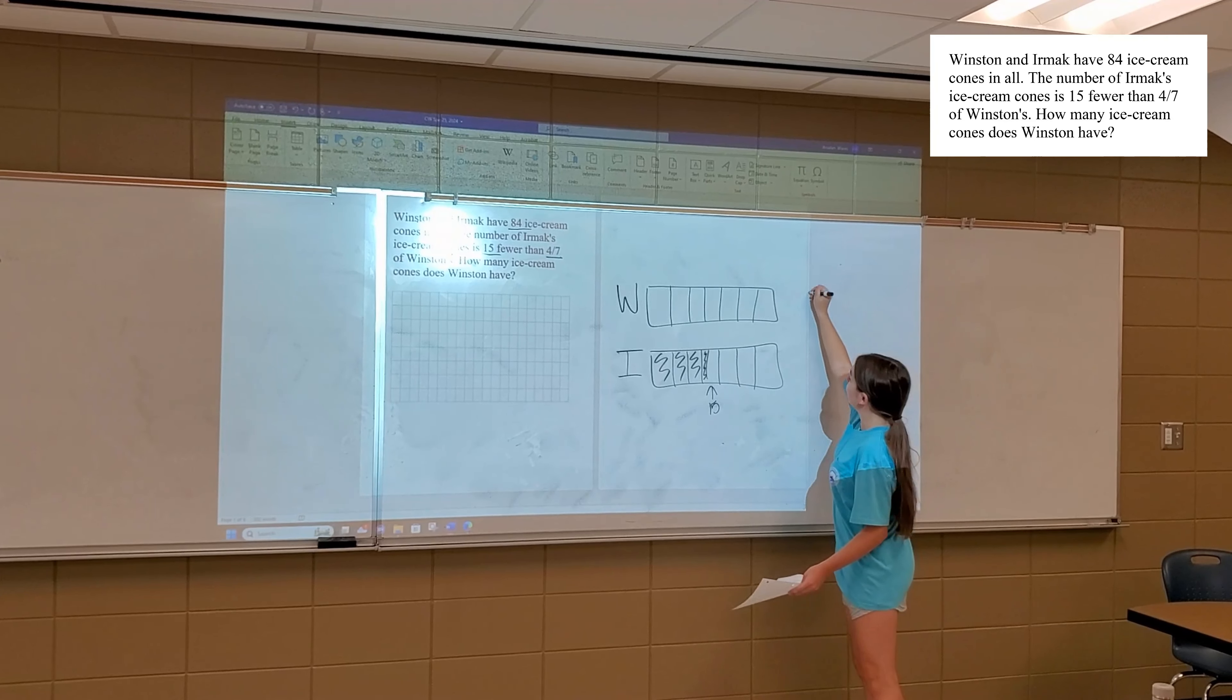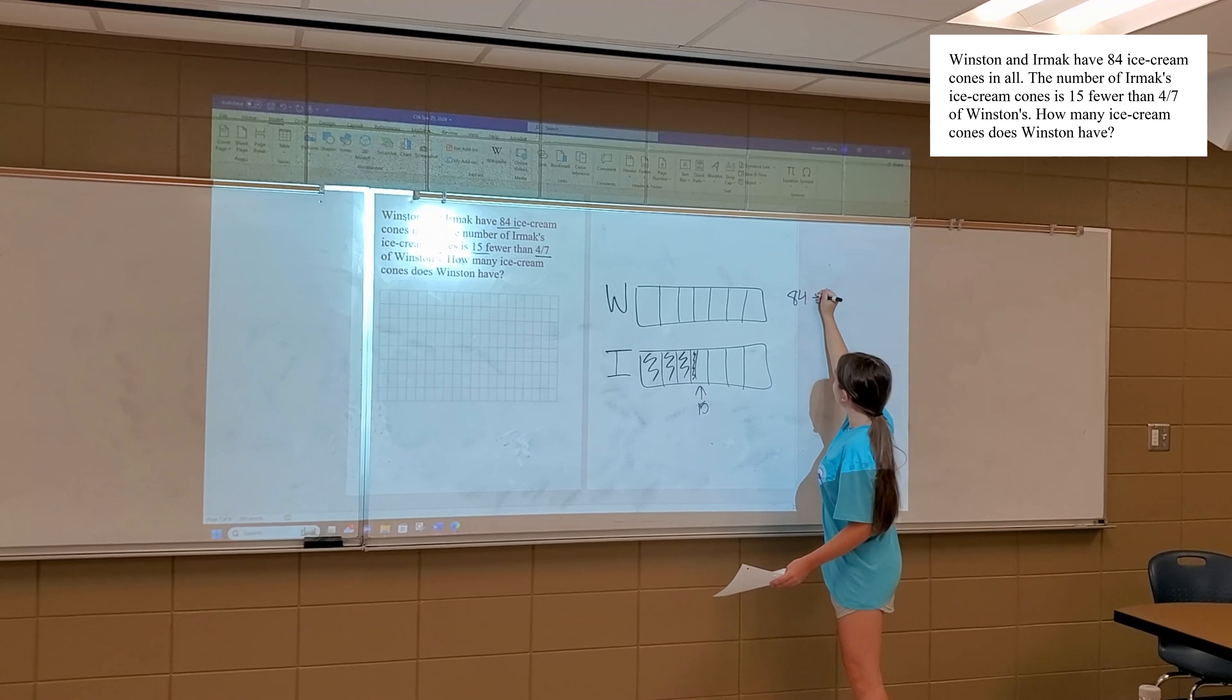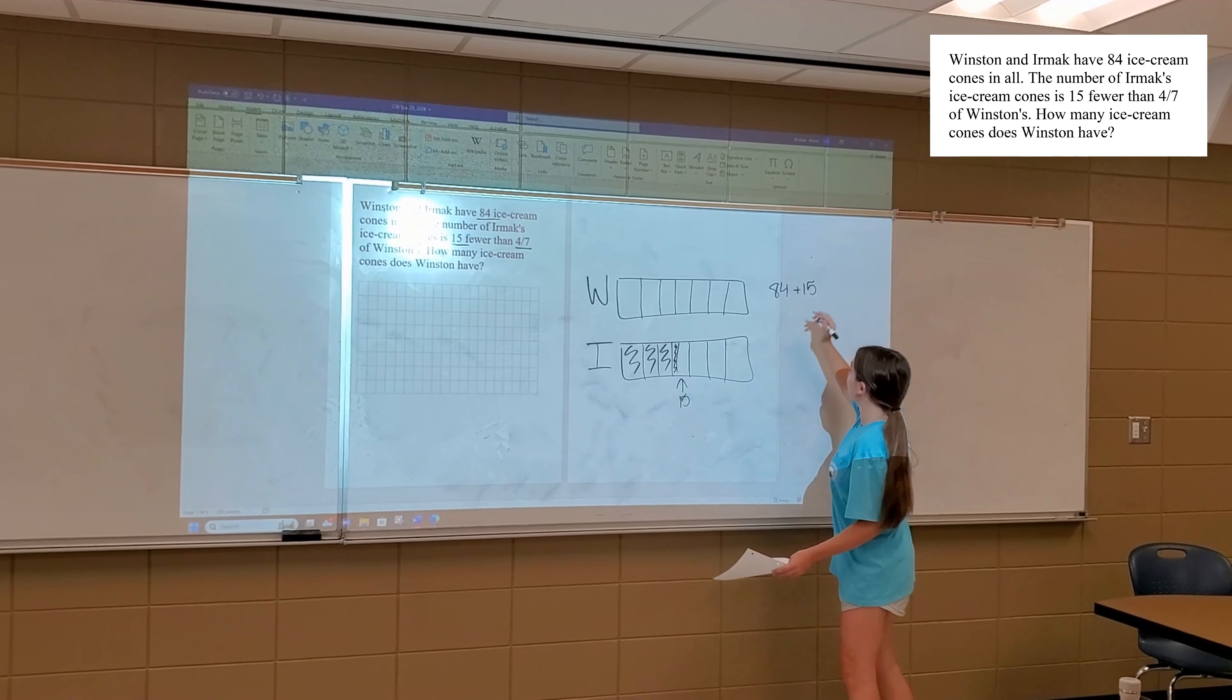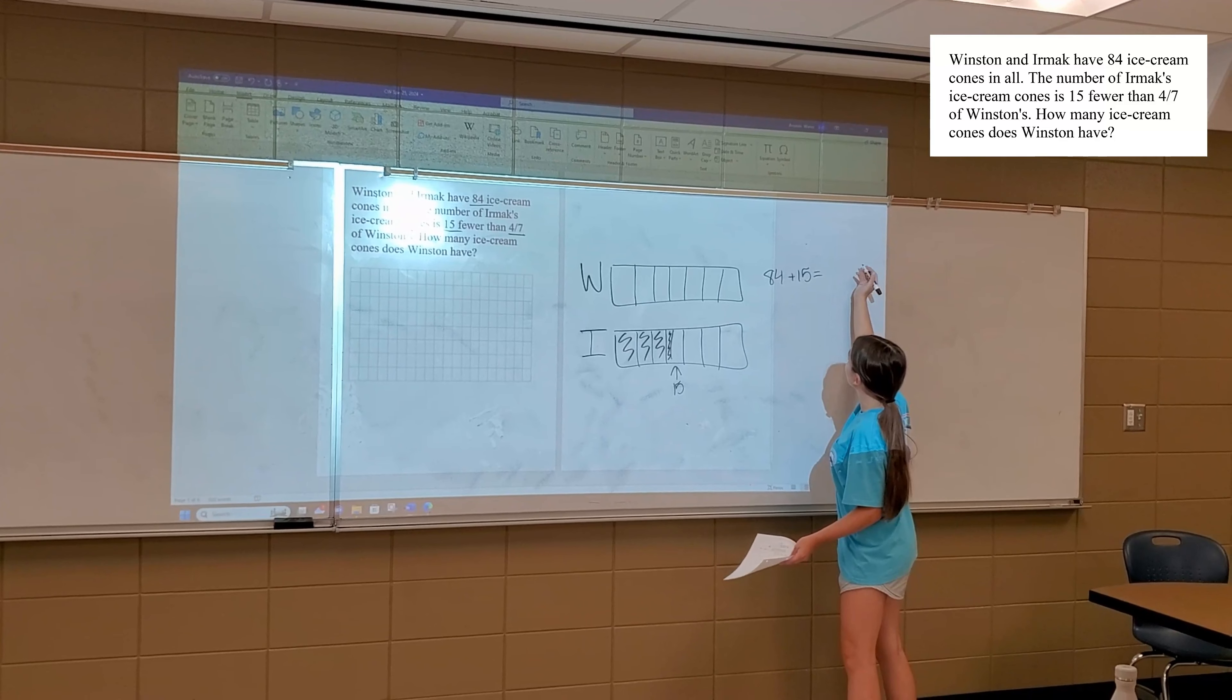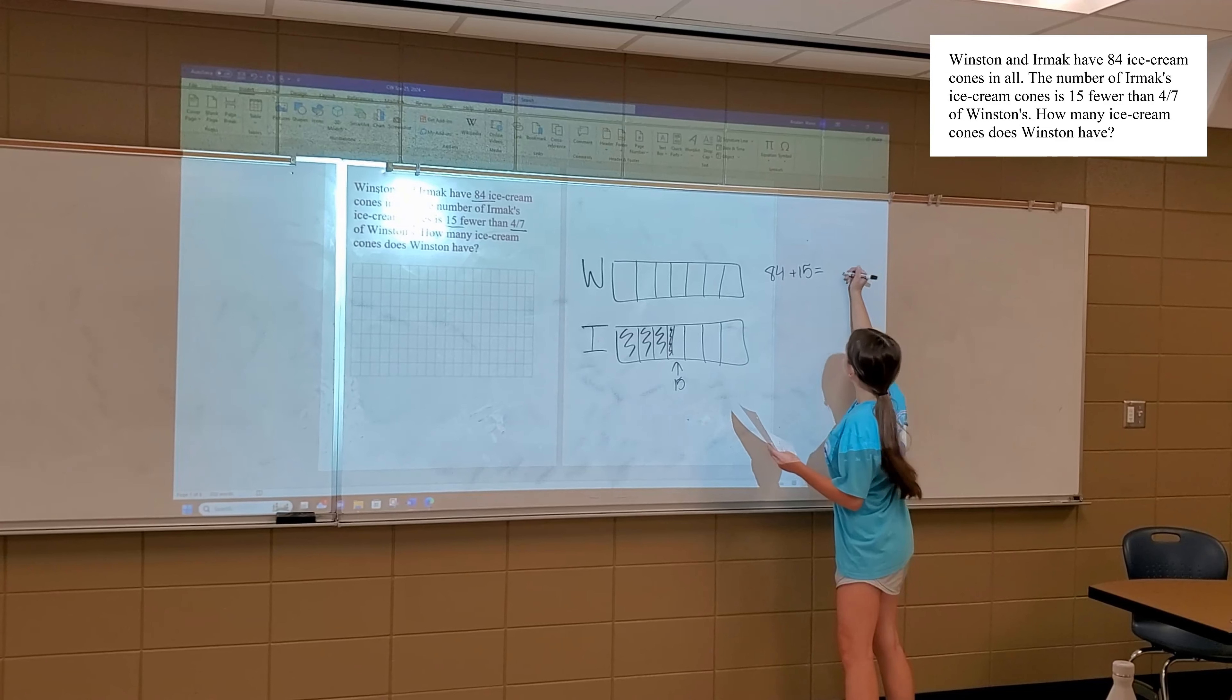So now we have to add 15 to the 84 to show how many ice cream forms we now have represented, which is 99.